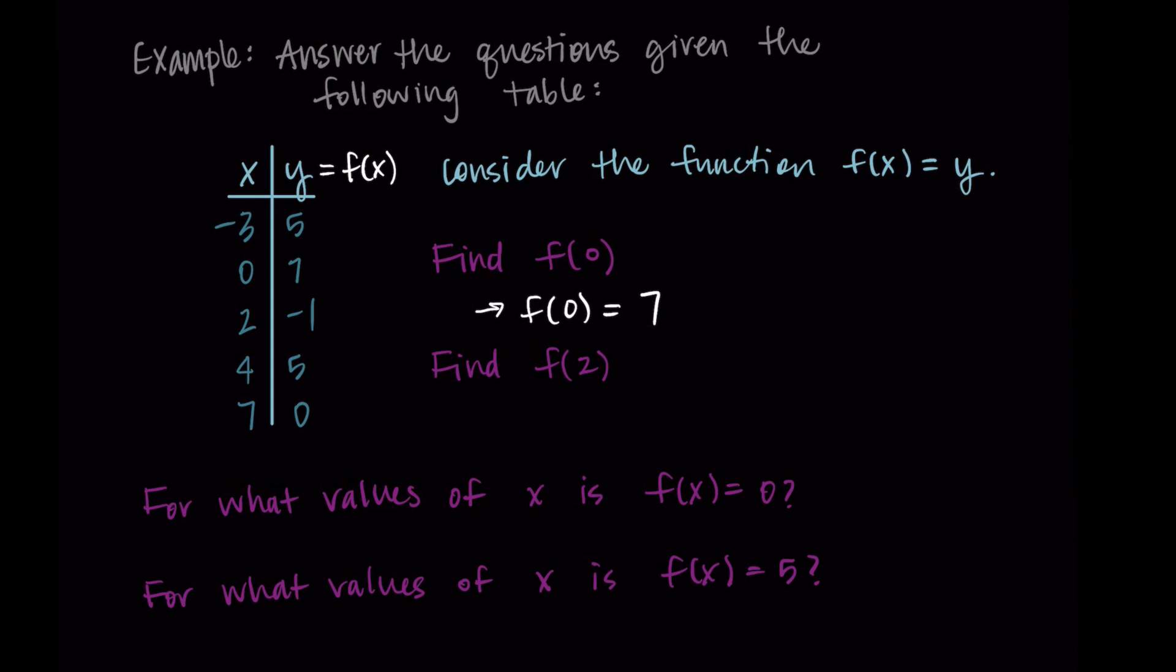Now we do the same thing for f of two. Two is an input, it's an x value, and we see it corresponds with the output negative one. So f takes the input two and provides the output negative one. And so f of two is equal to negative one, and negative one is our solution.